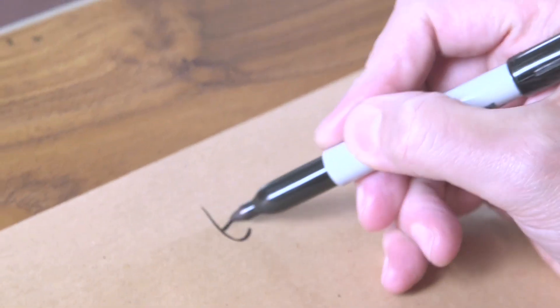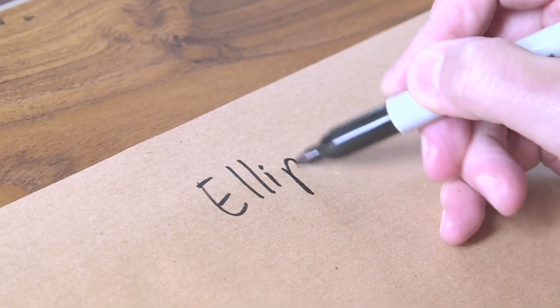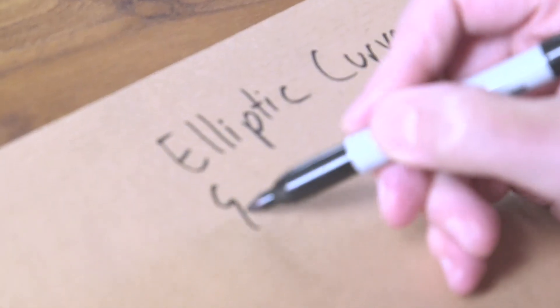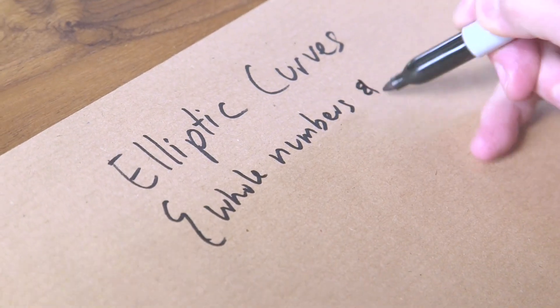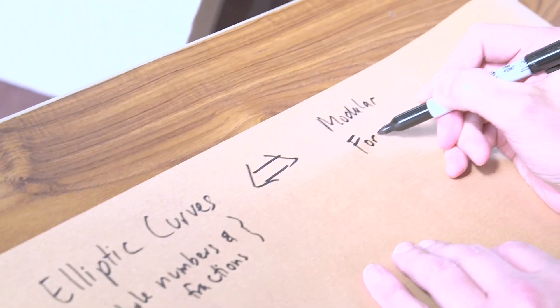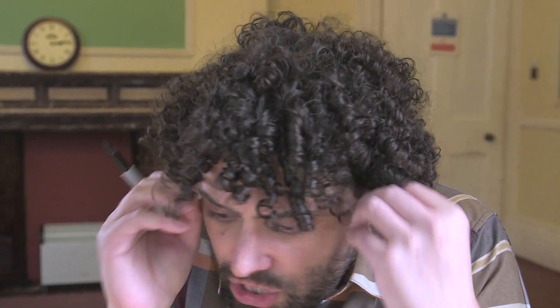It's about two things: elliptic curves, and specifically that whole numbers and fractions are actually modular forms in disguise. Even as a mathematician, it's like - what? What I want to do today is just try to get you to appreciate what this means. Just an appreciation of what's going on.